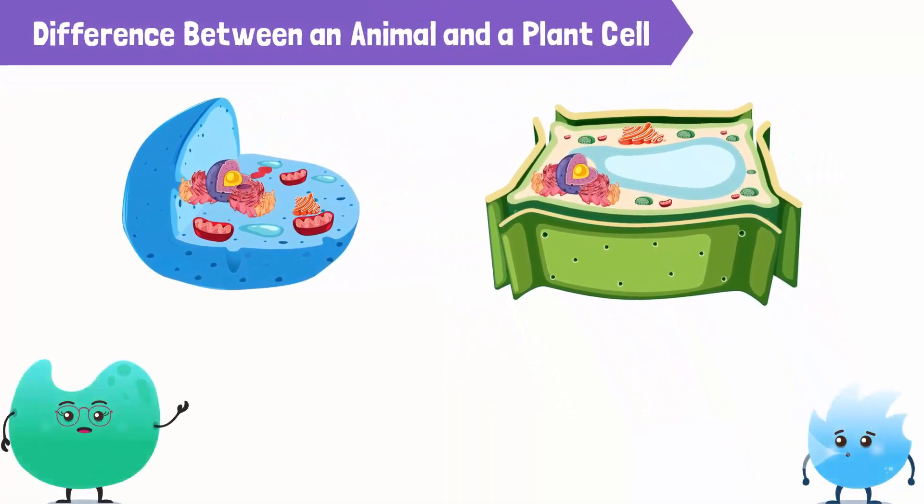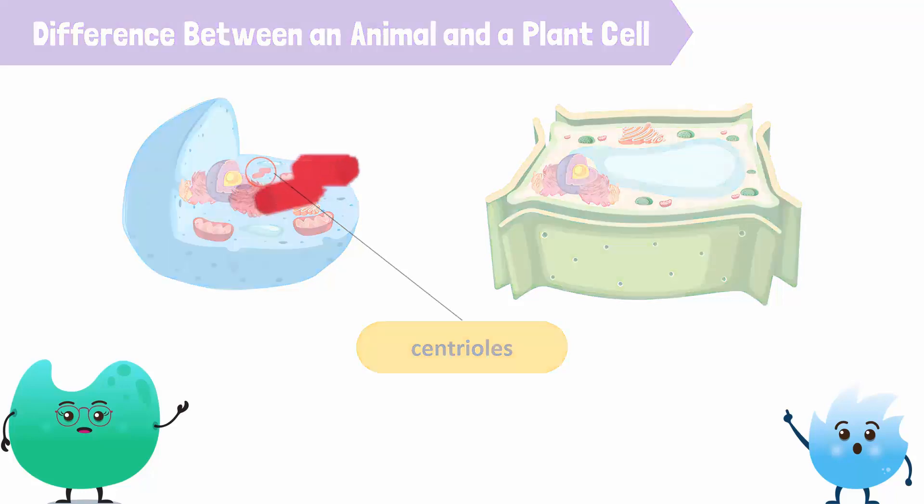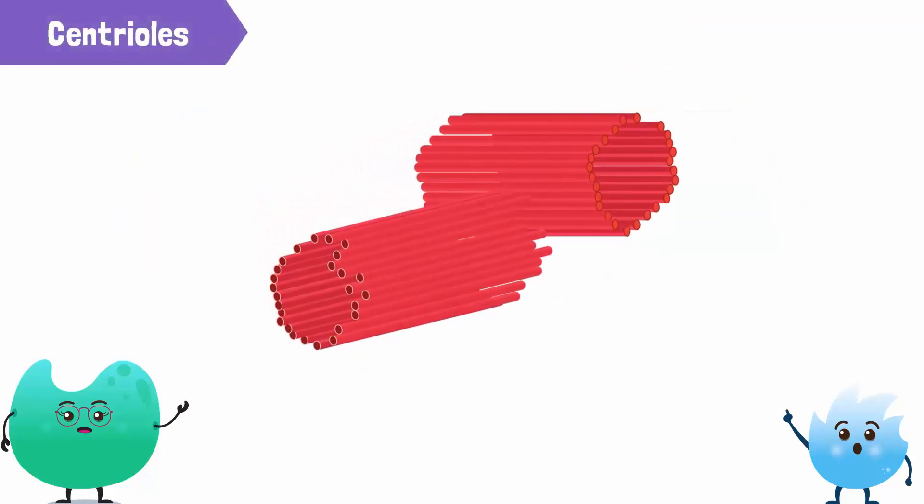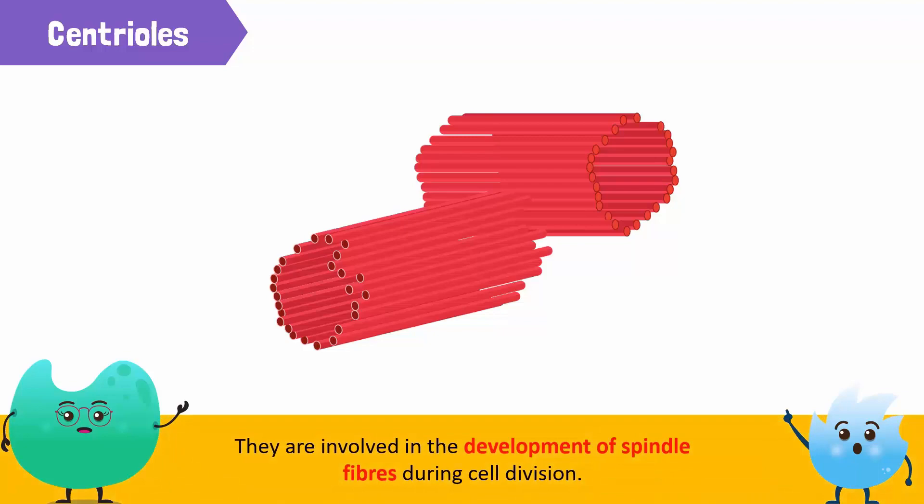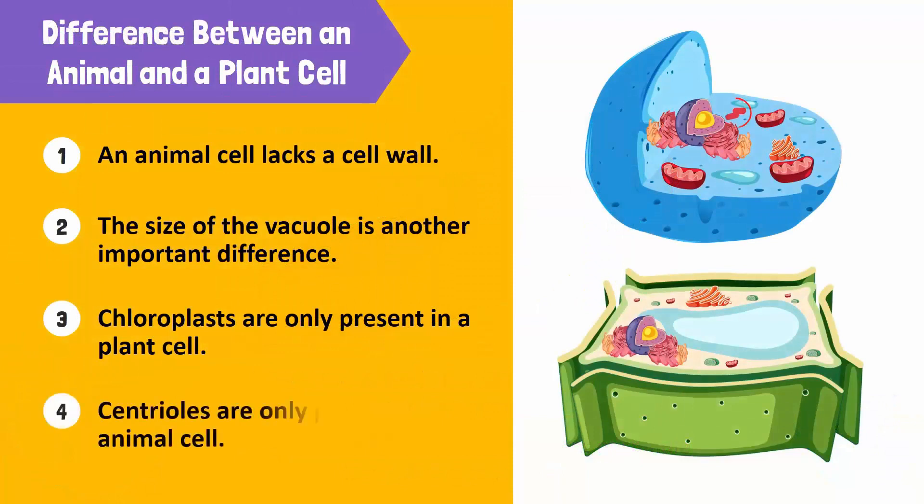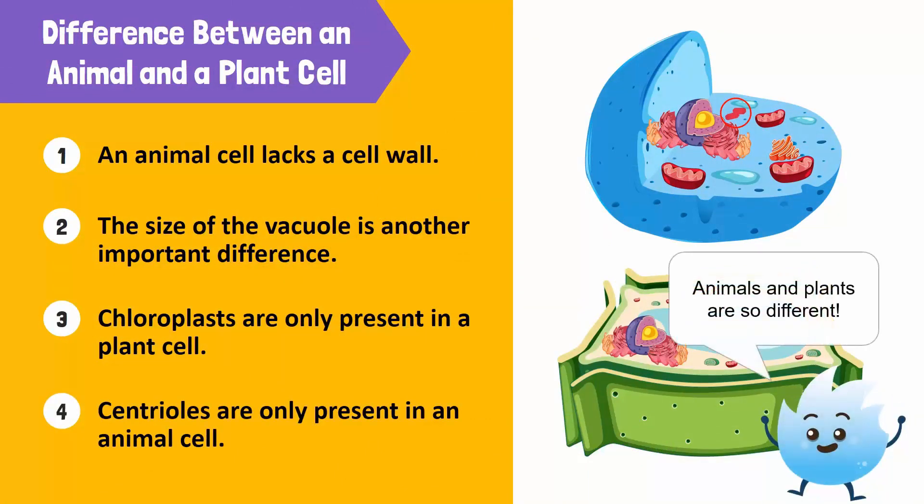What about the sticks inside the animal cell? These are centrioles. Centrioles are cylindrical organelles near the nucleus. They are involved in the development of spindle fibers during cell division. You'll only find them in an animal cell. That is amazing! No wonder animals and plants are so different.